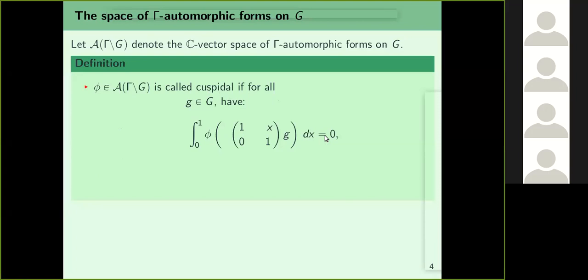This only deals with the cusp at infinity. Recall that (1 x; 0 1) acts on the upper half-plane H by translating the x-coordinate by x units. That is why you integrate over this matrix, and allowing all g in G is analogous to why you earlier allowed all y — integrating f(x+iy) over x.